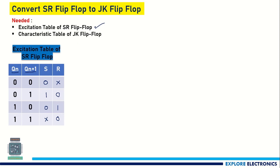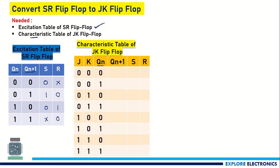Now we need to write the characteristic table of JK flip-flop. The characteristic table shows that for the current state Qn, for different values of J and K applied, what is the next state Qn+1 we are going to get. If 0 is the current state and we give J=0, K=0 as input, the flip-flop holds the state, so output remains 0. Similarly, if 1 is the current state and we apply J=0, K=0, the output 1 is also held.